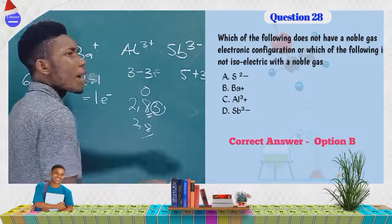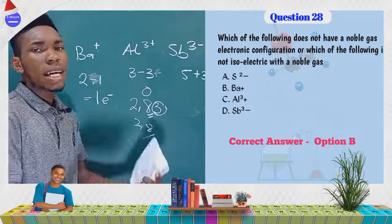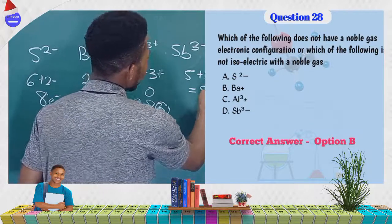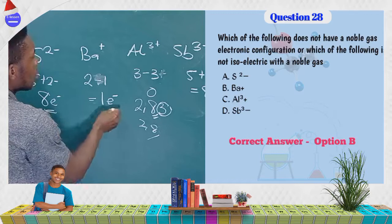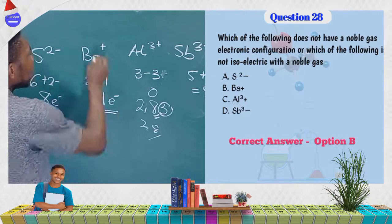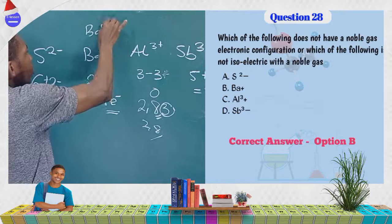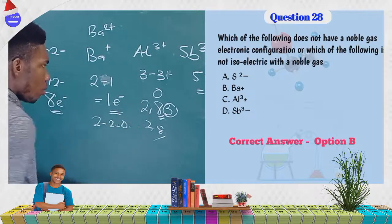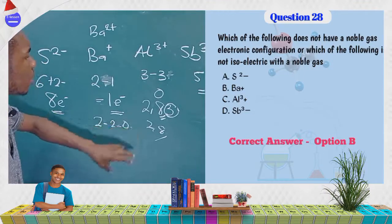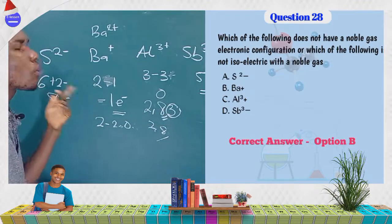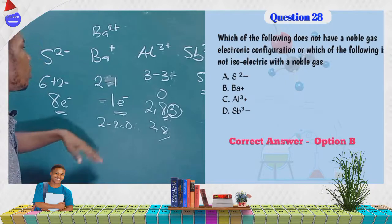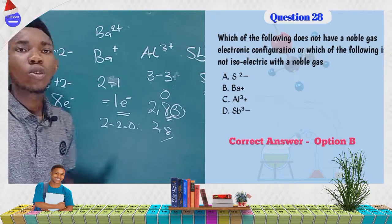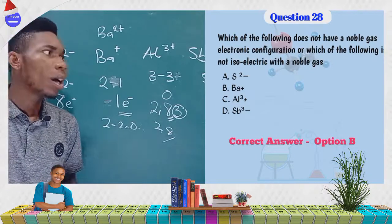Antimony is group 5; Sb³⁻ means it has gained 3 electrons, giving 8 in the outermost shell — noble gas configuration. So each of S²⁻, Al³⁺, and Sb³⁻ has 8 outermost electrons, but Ba⁺ does not. Had it been Ba²⁺, it would give 2 minus 2 equals 0 outer electrons — a noble gas config. The correct answer is Ba⁺.